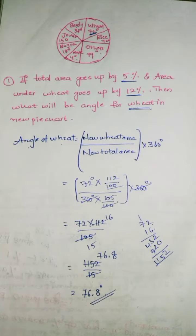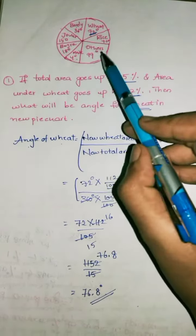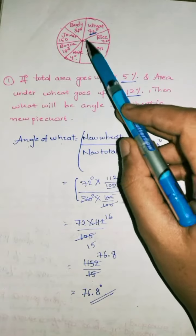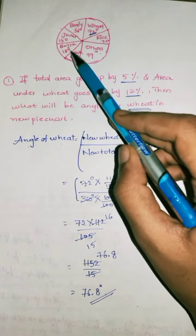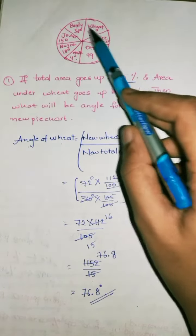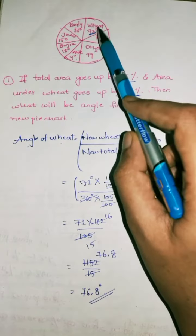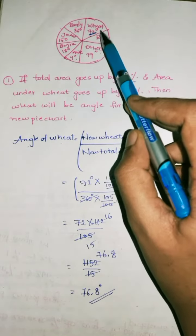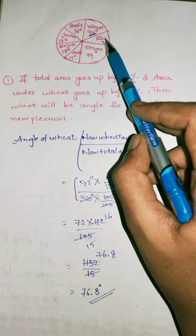Hello everyone, I will be dealing with a pie chart problem. A pie chart is given which indicates the distribution of different cereals. The distribution is given in degrees, not in percentages.